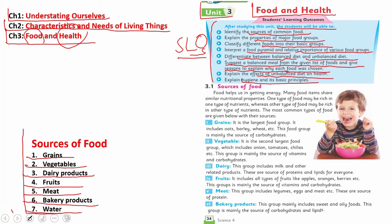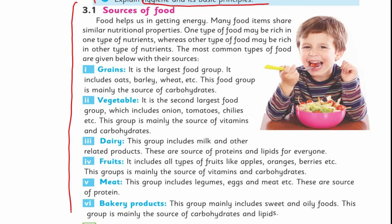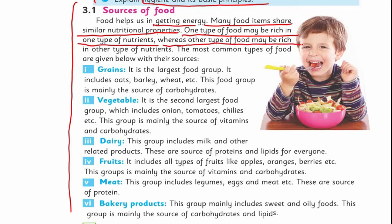Dear students, let's start from the sources of food, beginning with grains. First, have a bird's-eye view of the text. Food helps us in getting energy. Many food items share similar nutritional properties. One type of food may be rich in one type of nutrient, whereas another type may be rich in a different nutrient. We need items from all the groups.